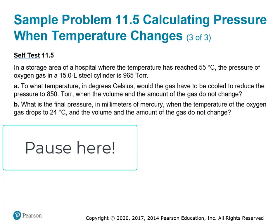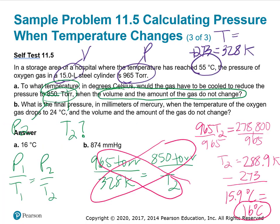Here's our next practice problem. Why don't you pause the video here? In a storage area of a hospital where the temperature has reached 55 degrees Celsius, I changed that to Kelvin, the pressure of oxygen gas in a 15 liter steel cylinder, that's a volume, is 965 torr, that's a pressure.